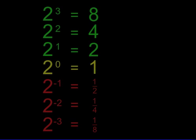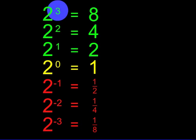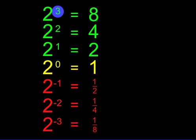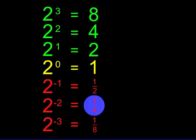We can now see an interesting pattern. The larger the negative exponent, the smaller the result. The larger the positive exponent, the larger the result. We can also see another interesting pattern: every time the exponent increases by one, the result doubles in size, and every time the exponent decreases by one, the result is cut in half.